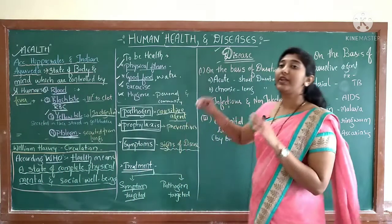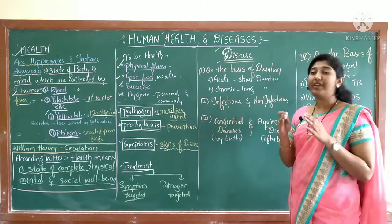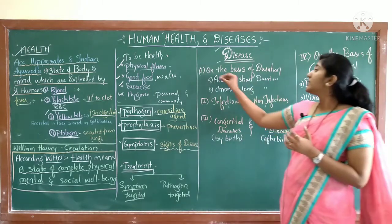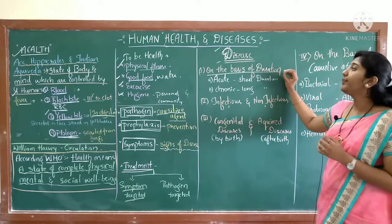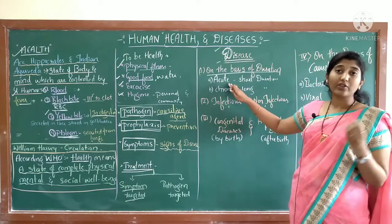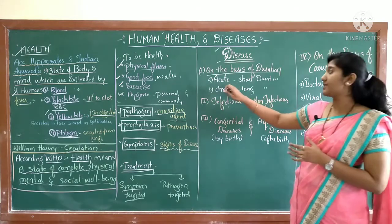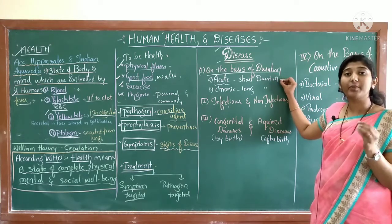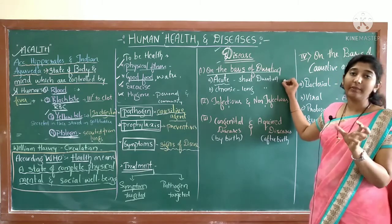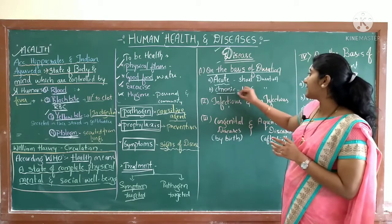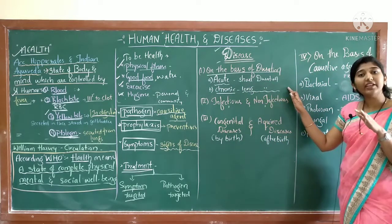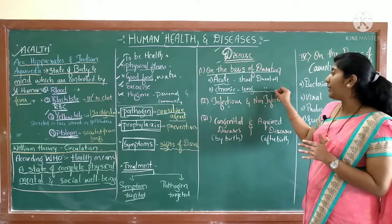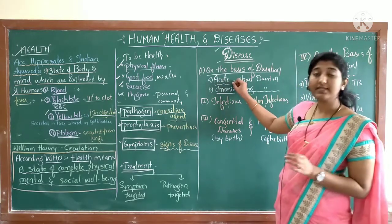We will study different types of diseases. We have classified diseases under many headings to understand them better. On the basis of duration: acute disease is a short-duration disease, but the intensity of symptoms is very high, and within a short period you get cured. Chronic disease is a long-term condition where symptoms are of low intensity but last for a long period of time.